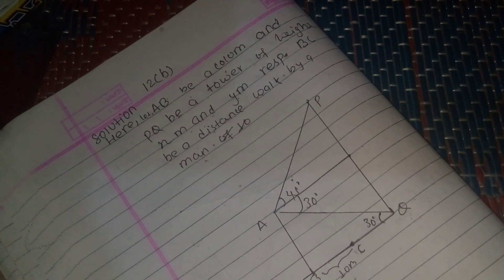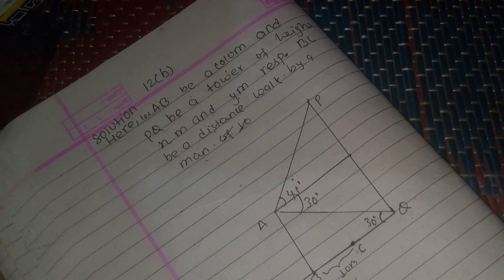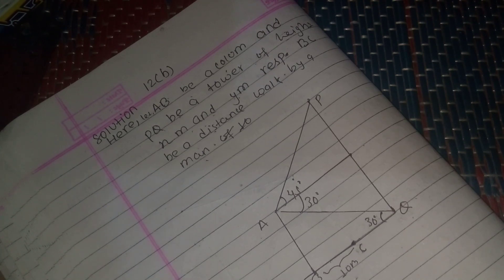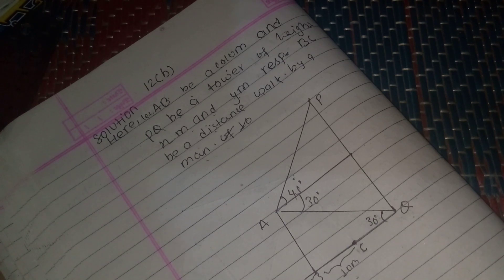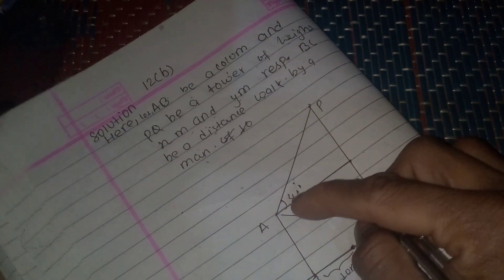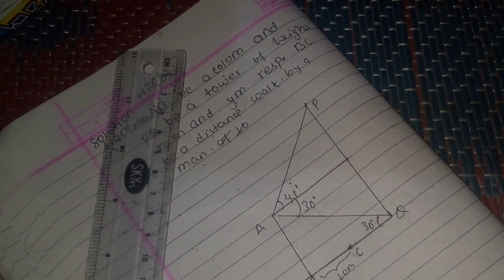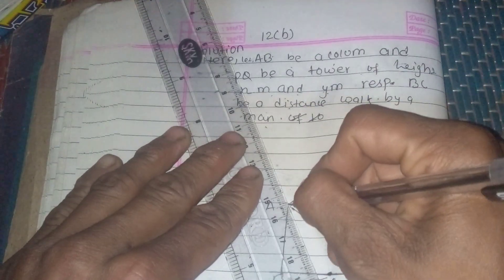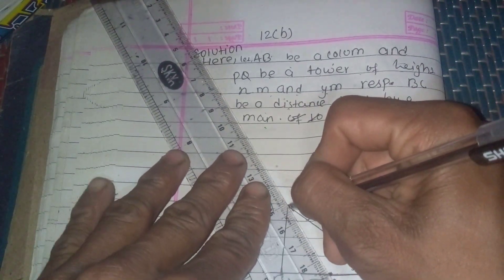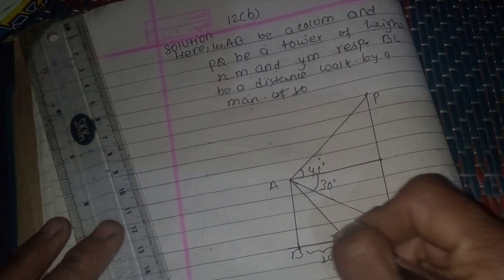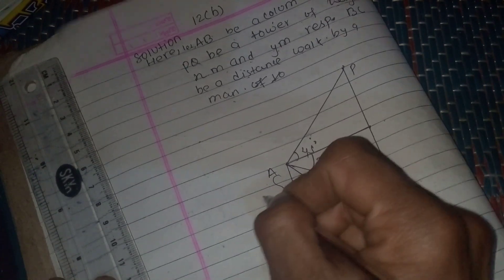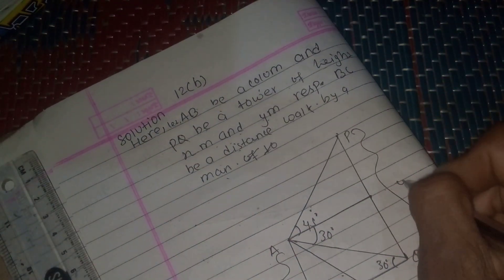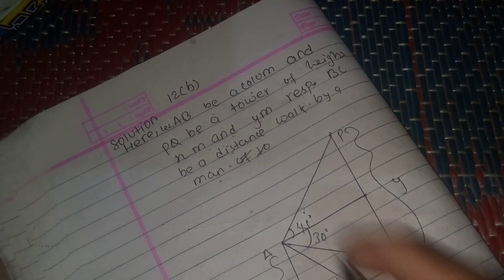The man walks 10 meters from the bottom of the column towards the tower and observes the angle of elevation of the top to be 60 degrees. Suppose the height of the column is x and height of the tower is y.